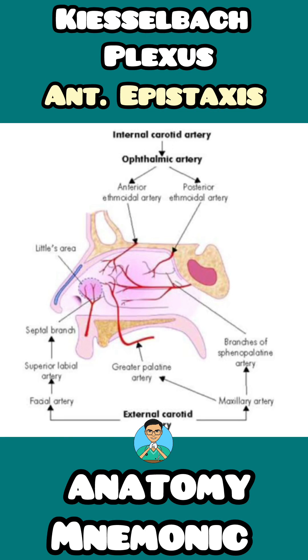Bleeding from the Kisselbach's plexus situated in the littles area of the nose is one of the major reasons of anterior epistaxis. The littles area is this part of the nose.